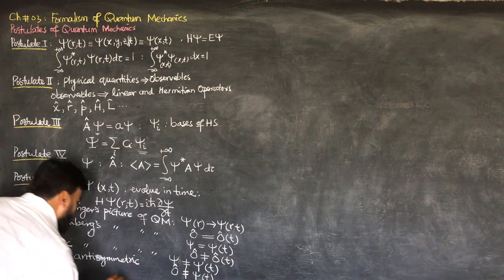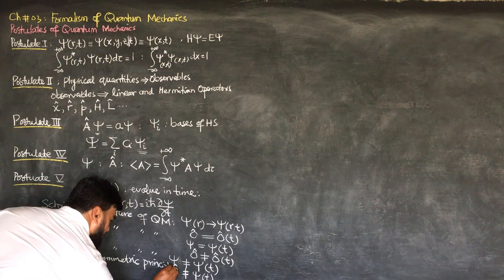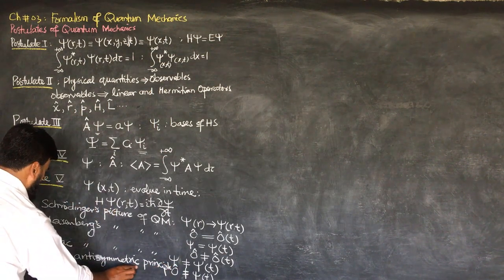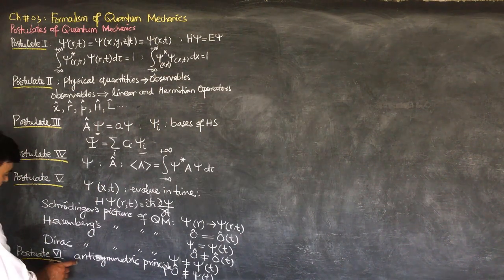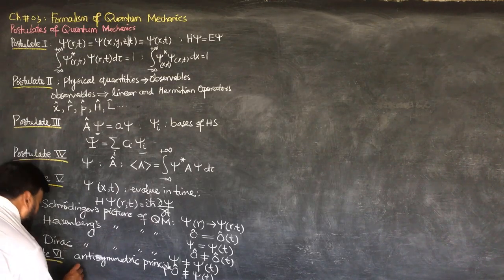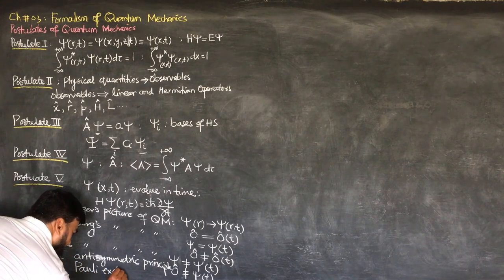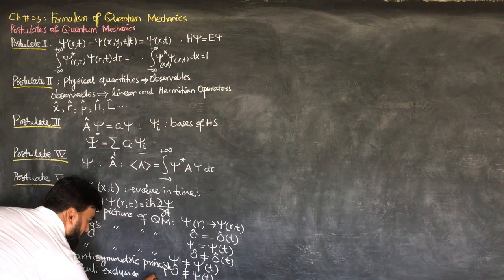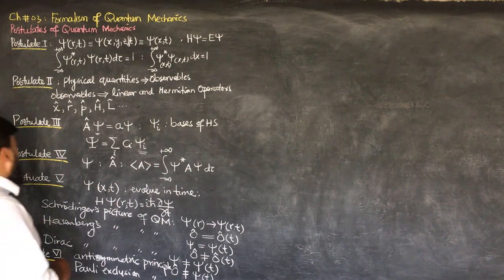The anti-symmetry of the wave function — the total wave function is anti-symmetric. This postulate actually gives the Pauli exclusion principle. We will not go into much detail about Postulate 6.